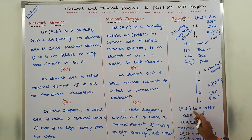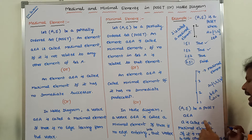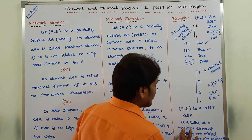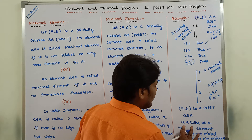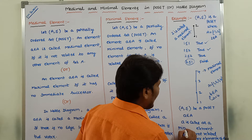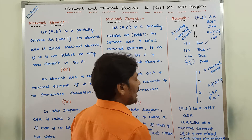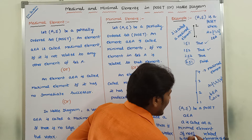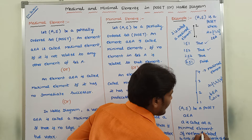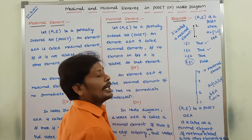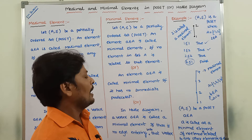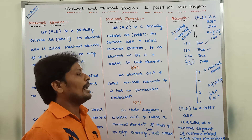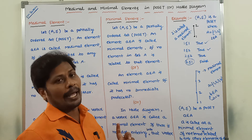Let a ≤ be a poset. Small a belongs to capital A, and a is called a minimal element if no element is related to any other element of set A. Hence, we can say that small a is called a minimal element.